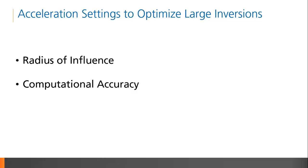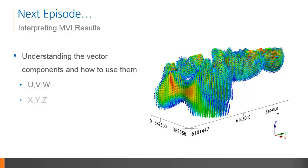I explained two key parameters that control the speed and accuracy of your inversion models. Our next episode will present the vector components of magnetization vector inversion results, and how to use them effectively in your interpretations. Stay tuned for more!